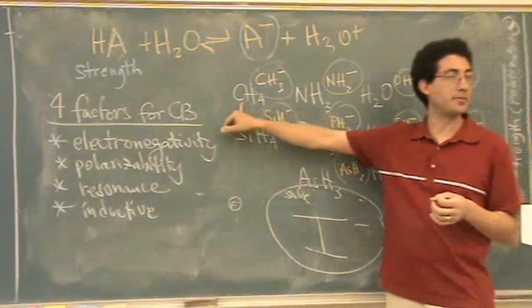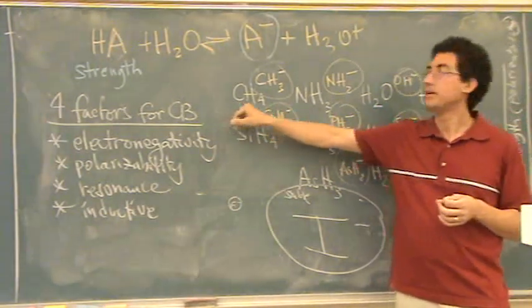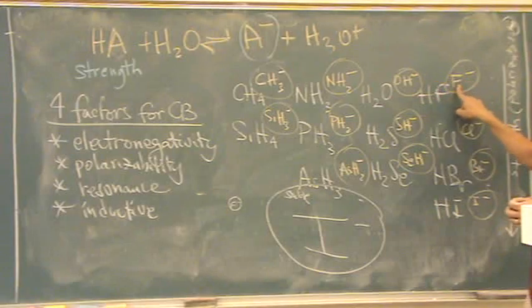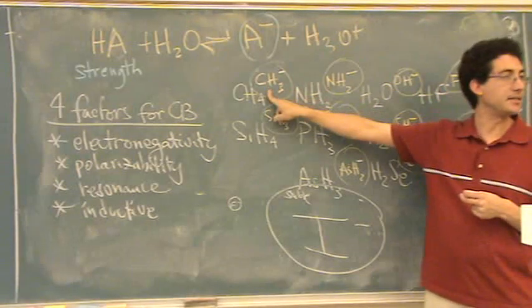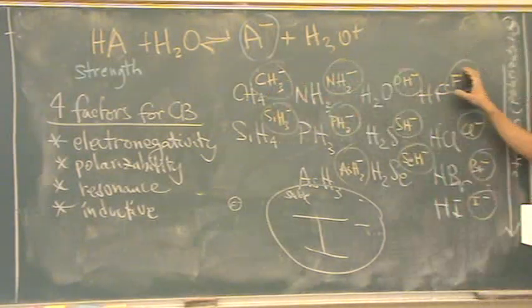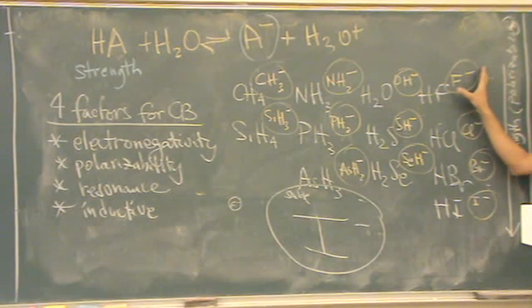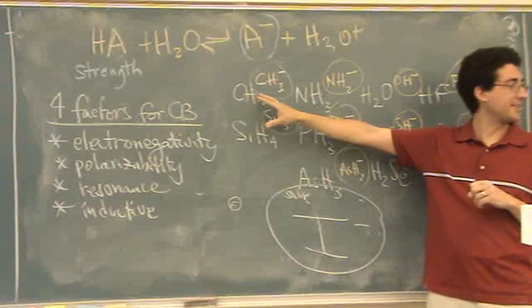Whereas, for example, carbon does not. So can you see how fluorine is more stable than CH3 minus? Because fluorine, because it's electronegative, likes this charge. Carbon does not like that kind of charge.